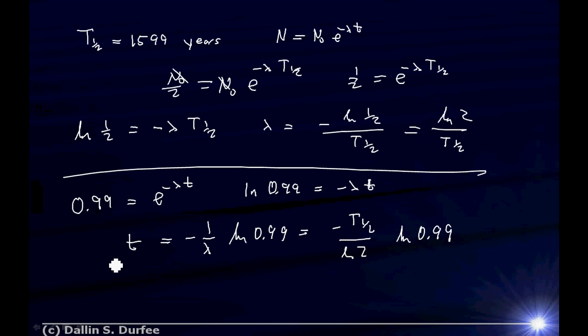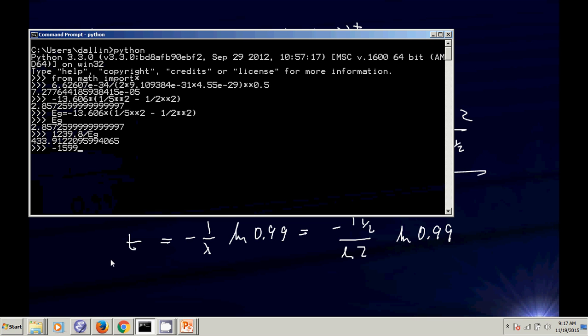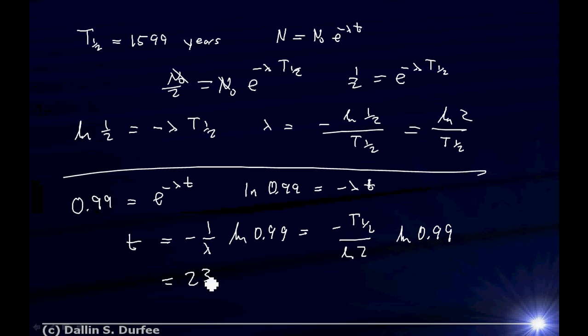So the answer is going to be minus the half-life, which was 1599 years. That's not in SI units, but they're the only units in the problem, so I'll just get my answer in years. That's fine. So if you have a sample of radium-226, that radium is going to stick around for a long time. It's not going to decay so fast that you can't do your experiments anymore, because after 23.2 years, it will have only dropped in its decay rate by 1%.